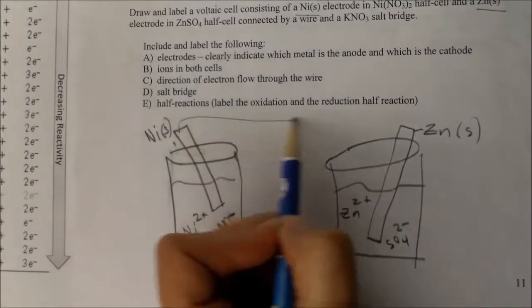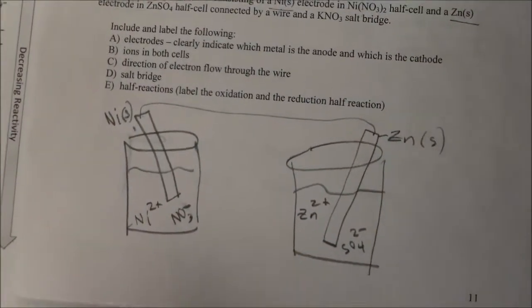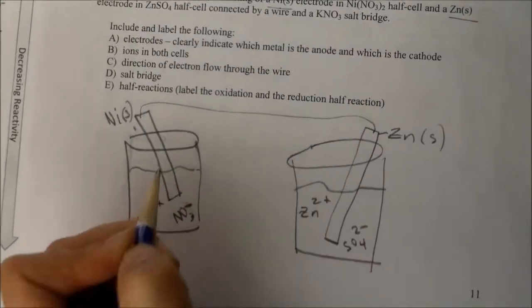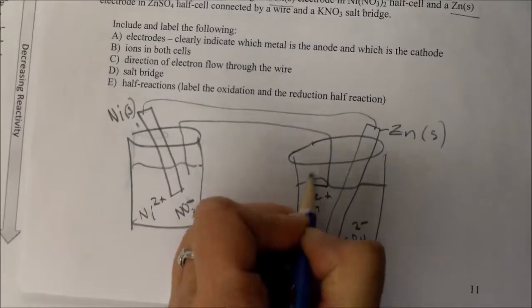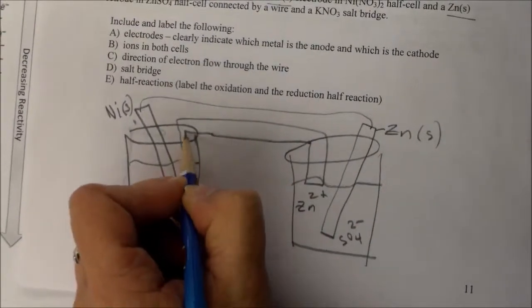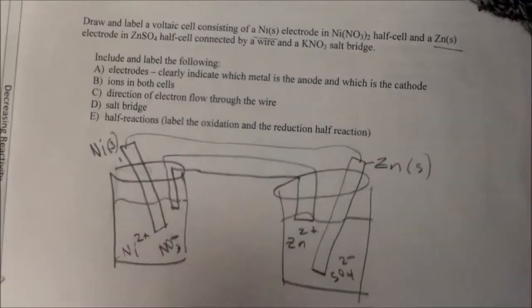Now nothing's going to happen if we don't connect the two of these with a wire, and of course electrons will flow from one to the other except negative charge will build up on one side. So we need to put in a salt bridge to allow ions to flow from one to the other, not electrons. Electrons only go through the wire.